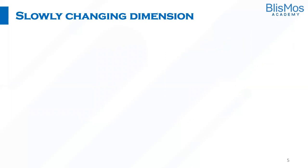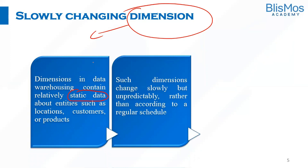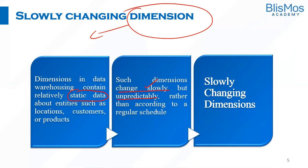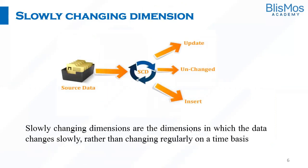That is where Slowly Changing Dimensions come into picture. When I say dimensions, I'm referring to the data in a table of the data warehouse. Dimensions in a data warehouse contain relatively static data — static meaning not going to change — like locations, customers, or products. But those dimensions change slowly and unpredictably rather than following a regular schedule. Slowly Changing Dimensions are the dimensions in which the data changes slowly rather than changing regularly on a timely basis.